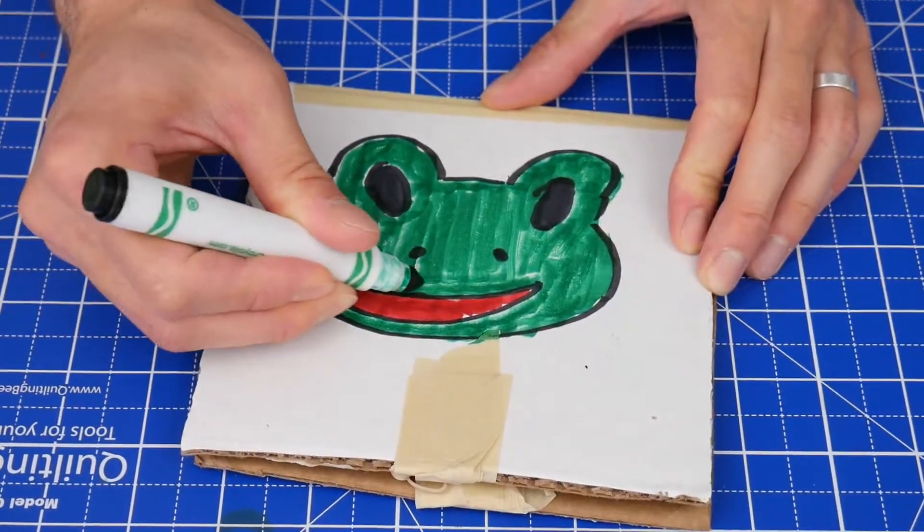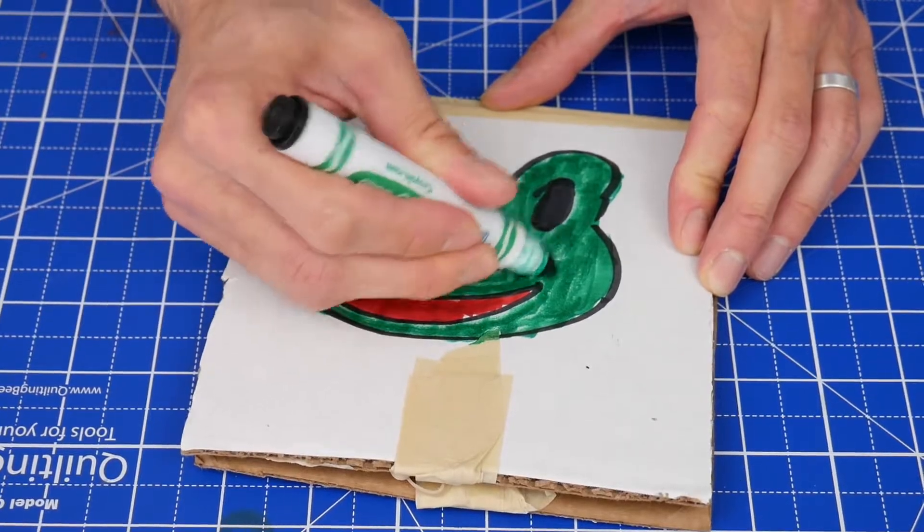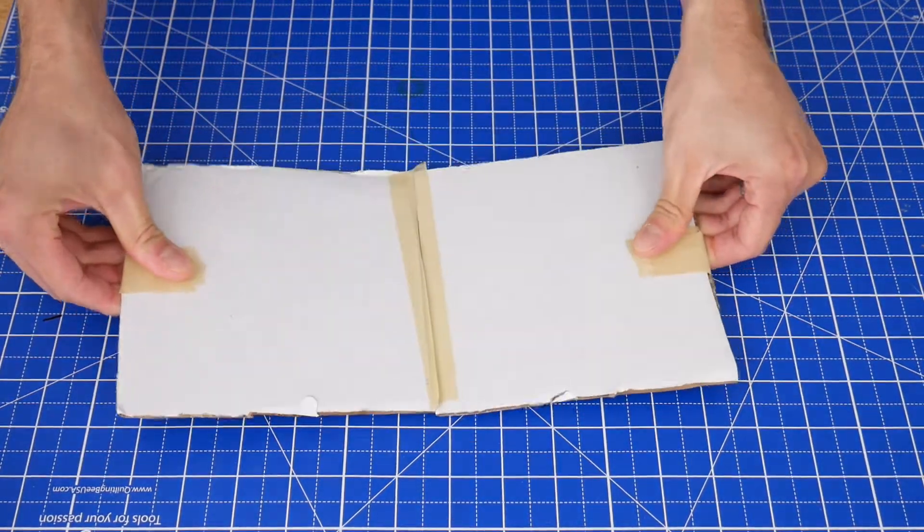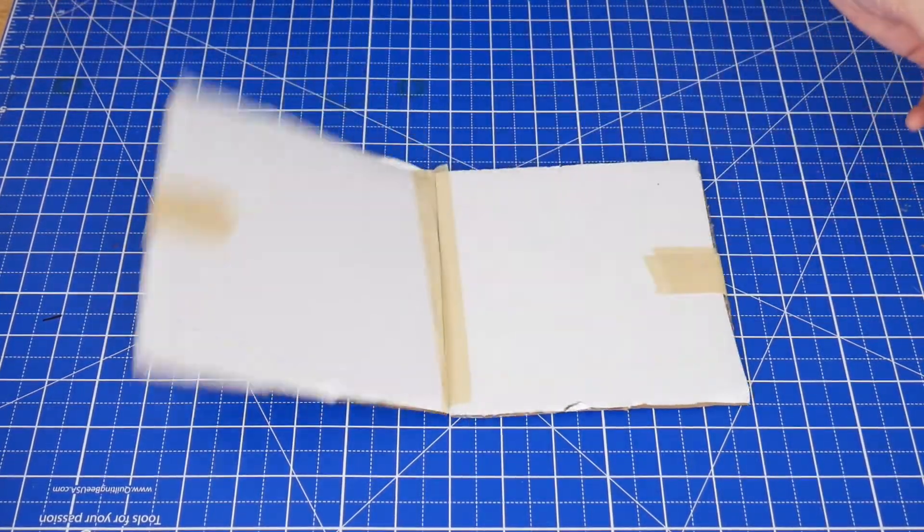And at any point, if you want, you can color on a frog face. To use it, pull the cardboard open and keep going until it's folded in half. Use one hand to hold it down and then let go.